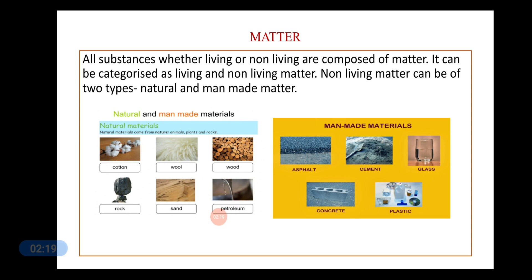Now, petroleum is found in crude form. But, when it is refined, we get the petroleum in our refineries. Now, these man-made materials, like the asphalt, cement, glass, concrete, plastic, these are all made by human beings. So, these are all man-made materials.